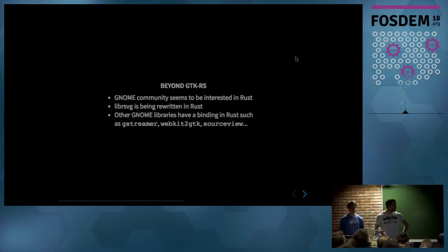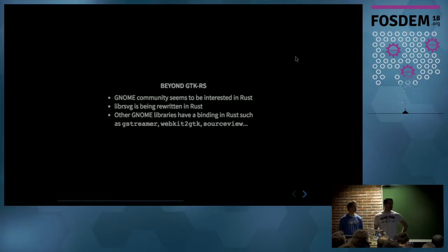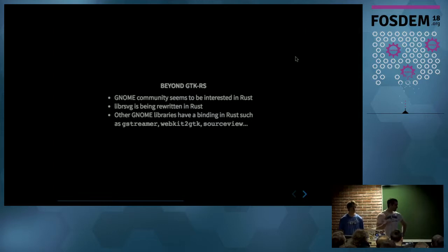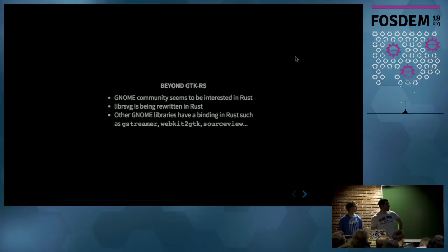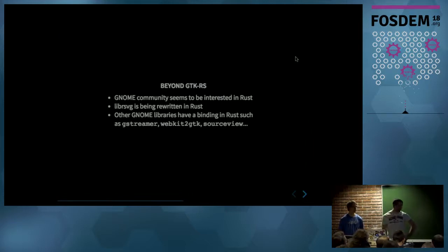We had a few people from the GNOME community show very interesting interest. We started a few Hackfests last year about writing GNOME class projects, for example. There is Federico, a big figure in GNOME, who is rewriting the librsvg library in Rust directly. We also have other GNOME libraries starting to have bindings — GStreamer, WebKitGTK, Source View, and a lot more. As long as it has a GIR file, basically you can generate it automatically.